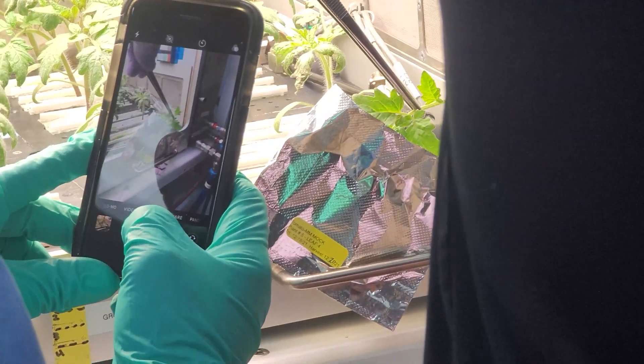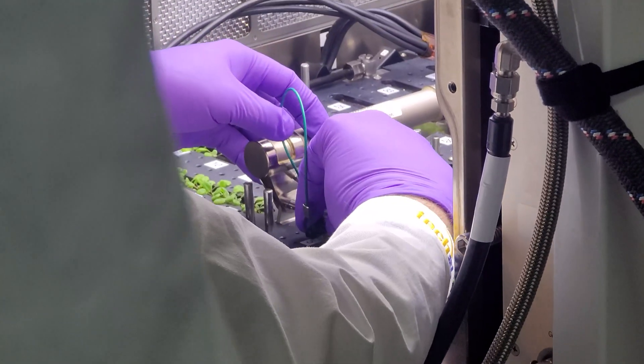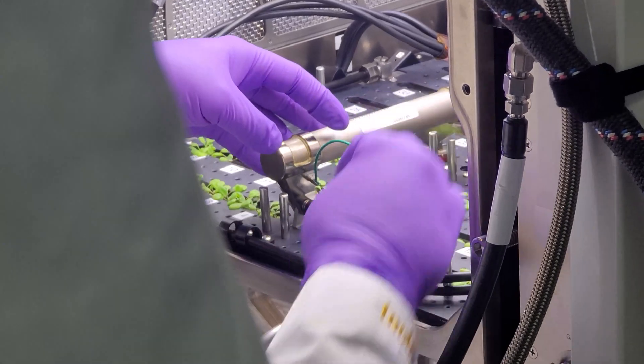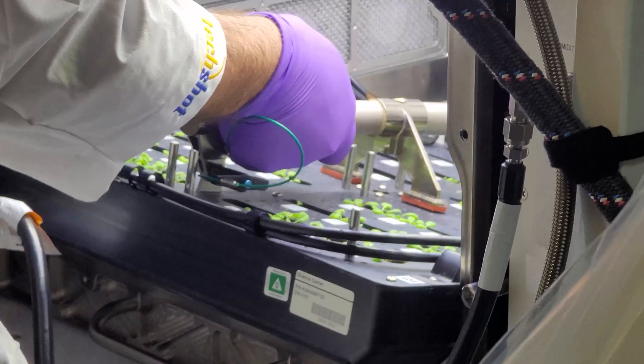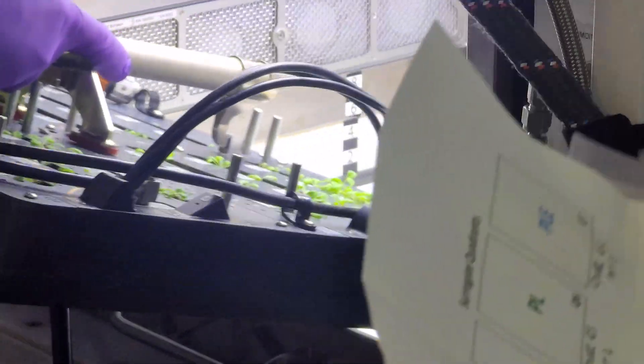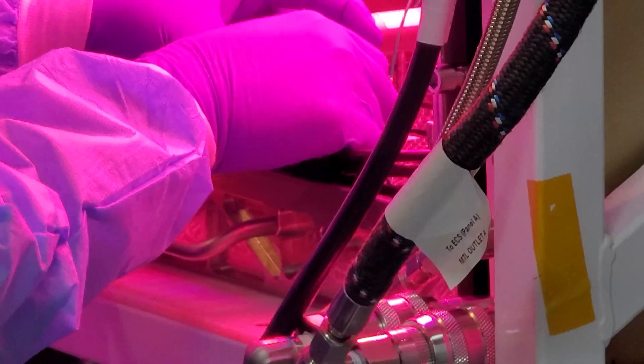Once we perform the final harvest of whatever the experiment is growing then we remove the science carrier, disconnect everything, rinse all the systems out to make sure it's all clean, and sanitize the inside. At that point we're ready to perform the next experiment and we kind of keep in this cycle of performing the ground experiment and then watching as the in-space experiment is performed.